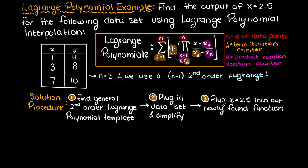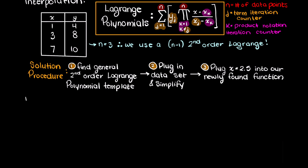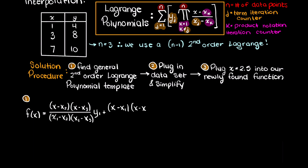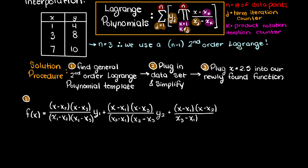Our first step is to develop the general second order Lagrange polynomial equation, which I demonstrated in the past video. In brief, we know that we will need one term for each data point we have, as we need our Lagrange polynomial to pass through every data point that we give it. I will go ahead now and rewrite the general second order Lagrange polynomial equation that we found in our last video.